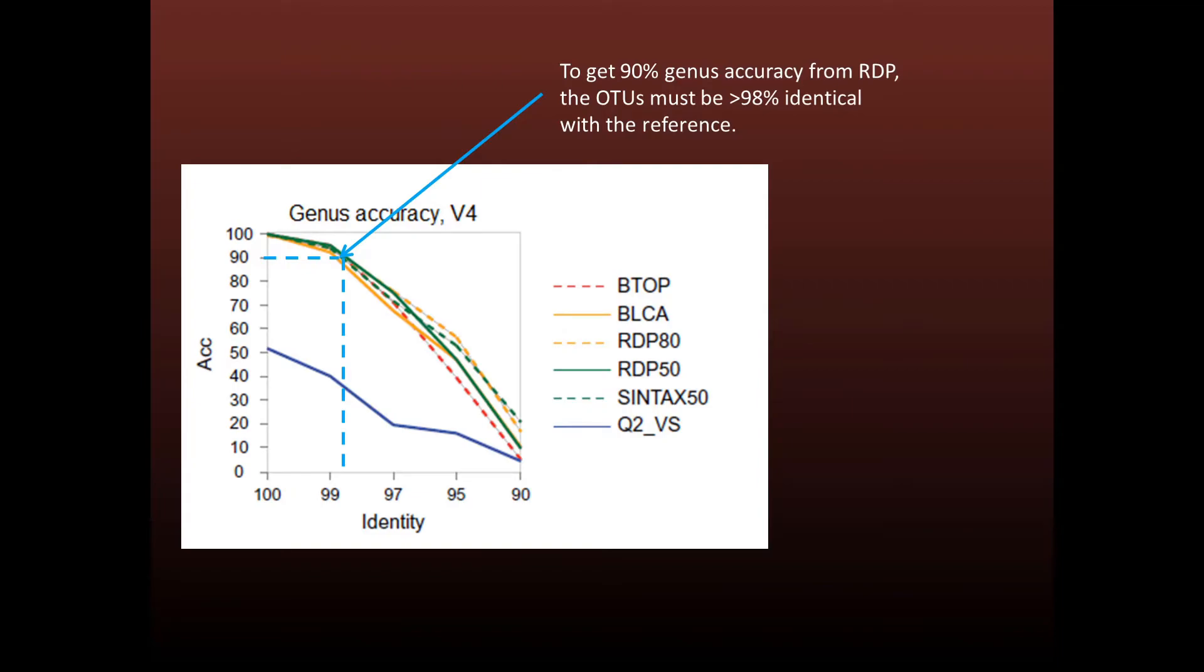These results also show that to get the claimed accuracy of around 90% with the RDP classifier, your OTU sequences must be greater than 98% identical with the cultured strain reference. This is unlikely to happen in practice.